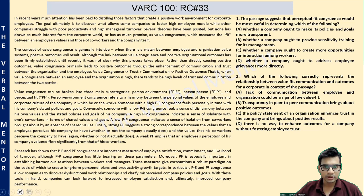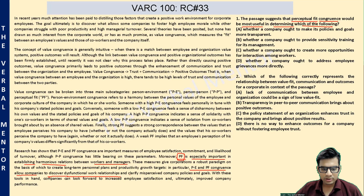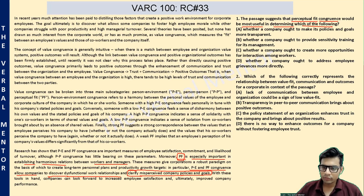This is an important management theory — value congruence theory. Question one: the passage suggests that perceptual fit congruence would be most useful in determining which of the following? Perceptual fit is the third subcategory. It is written that PF is especially important in establishing harmonious relations between workers and managers, and also allows companies to discover dysfunctional work relationships and clarify misperceived company policies and goals. So if a company can identify the difference between its stated goals and employees' perception of the company's goals, then it can clarify misperceived policies — that's where PF congruence helps.